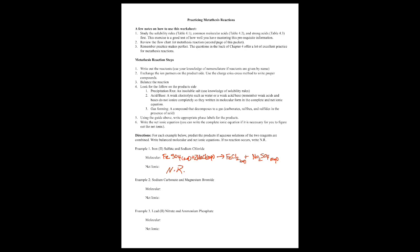For the second example, we have sodium carbonate — Na2CO3 aqueous, because CO3 is 2-minus — plus magnesium bromide, MgBr2 aqueous, because magnesium is an alkaline earth metal with a 2+ charge. Now we do our partner exchange: we get MgCO3, which works because magnesium is 2+ and CO3 is 2-minus. And then we get NaBr, where both Na and Br have a +1 and -1 charge respectively. Sodium bromide is soluble because sodium halides are soluble, so that gets aqueous.